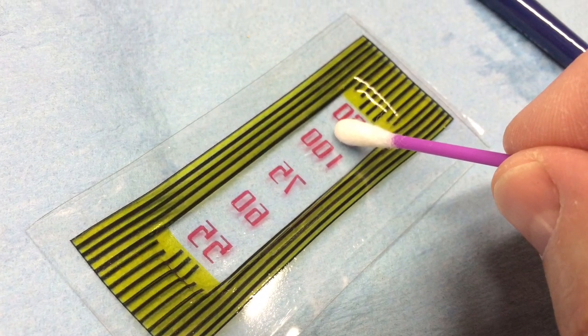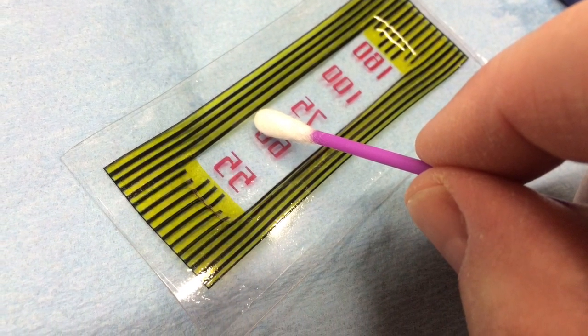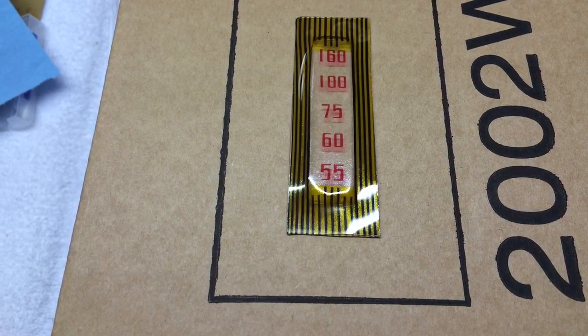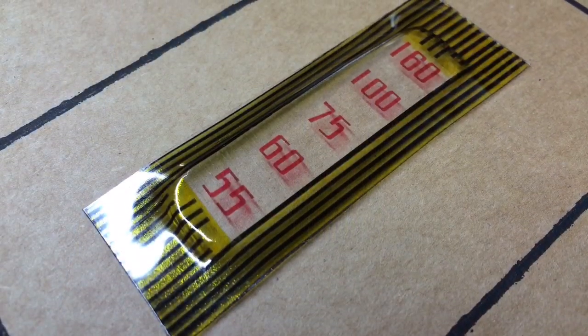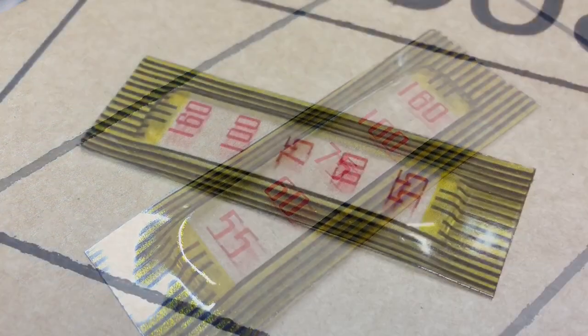And here again I'm using a Q-tip and just getting out the remaining air bubbles by applying very light pressure. So after letting the decal set up for maybe 30 to 45 minutes, I trimmed it up there with the scissors. And you can see the final product now.